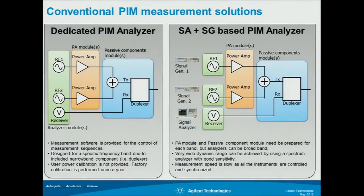Here are two conventional PIM measurement solutions. One is a dedicated PIM analyzer, and the other is an SA and SG-based PIM analyzer. The measurement idea is the same as the previous slide — we have two signal sources, two power amplifiers, combiners, and duplexers.